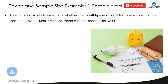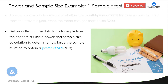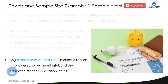Here is the example. An economist wants to determine whether the monthly energy cost for families has changed from the previous year, when the mean cost per month was $200. Before collecting the data for a one sample t-test, the economist used a power and sample size calculation to determine how large the sample must be to obtain a power of 90% — here beta equals 0.1. So we have our first metric: a required power of 90%.